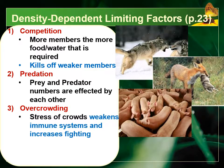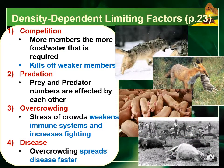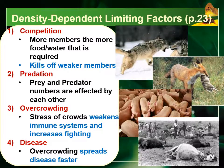Overcrowding is another density dependent issue. The more individuals in a population, the more overcrowding occurs. This increases stress, which weakens the immune system, increases fighting, and makes competition worse. Disease is also density dependent — the more individuals packed together, the easier it is for disease to spread. With a weakened immune system from overcrowding, individuals are more likely to spread the disease, get infected, and potentially die.